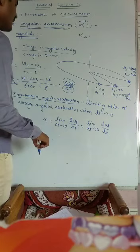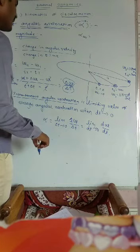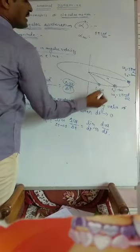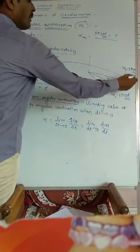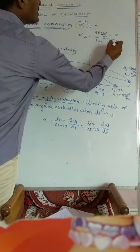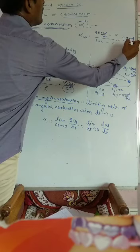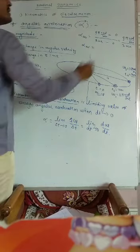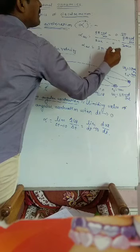We want to find the average angular acceleration. Average angular acceleration equals final angular velocity minus initial angular velocity divided by final time minus initial time. Here, final angular velocity is 9 pi radians per second, initial angular velocity is 0, final time is 3 seconds, and initial time is 0. So average angular acceleration equals 9 pi divided by 3, which is 3 pi radians per second squared.